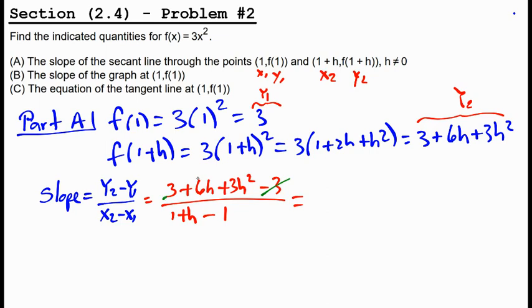And we can see the 3s cancel and the 1s cancel. And we're left with 6h plus 3h squared over h. We can factor h out from the numerator.